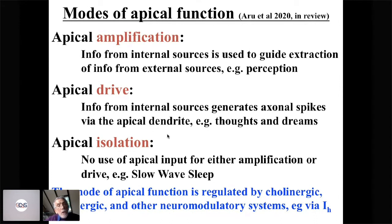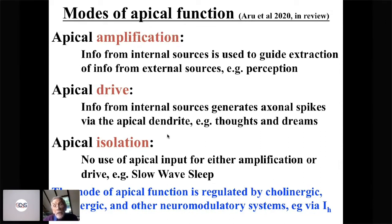The mode of apical function is strongly regulated by the cholinergic, adrenergic, and other neuromodulatory systems. Notably, it does so via the hyperpolarization-activated current through HCN channels — the IH current. Relatively few neuroscientists and hardly any psychologists have heard of IH, yet it plays a major role in determining how internal information arriving at the apical integration zone interacts with ascending feed-forward information arriving through the soma via the basal dendrites. IH is a very major and understudied process.